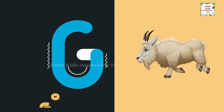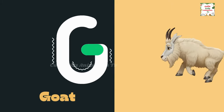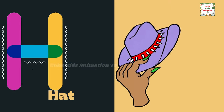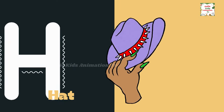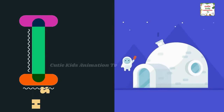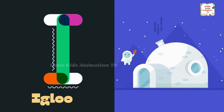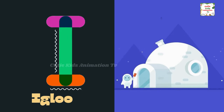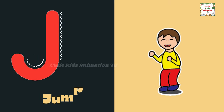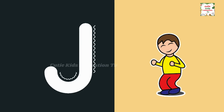G is for goat. G, G, goat. H is for hat. H, H, hat. I is for igloo. I, I, igloo. J is for jump. J, J, jump.